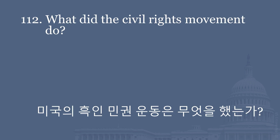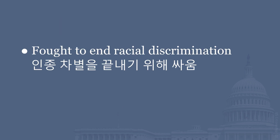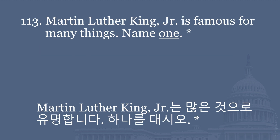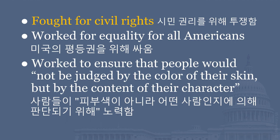What did the Civil Rights Movement do? Fought to end racial discrimination. Martin Luther King Jr. is famous for many things. Name one. Fought for civil rights. Worked for equality for all Americans. Worked to ensure that people would not be judged by the color of their skin but by the content of their character.